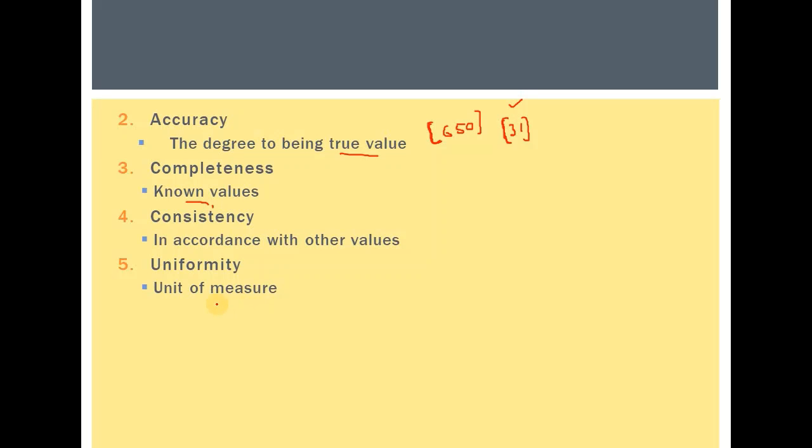Finally, uniformity refers to the fact that for a particular feature we have values presented in different units, and this problem may arise if we have combined data coming from different sources. If we are getting data from multiple sources then duplication can also be one of the problems. In this lecture we have tried to summarize what we mean by good quality data, so that in coming lectures when we try to improve on the quality of data we would already know the characteristics of good quality data and can cross-check which aspects are being improved by performing certain actions on the data.